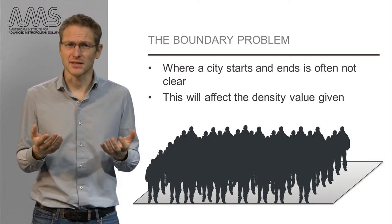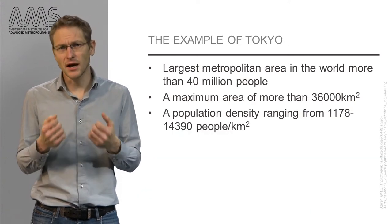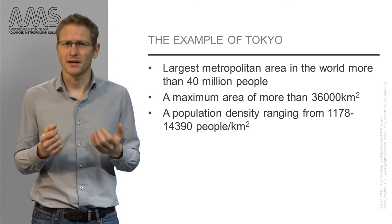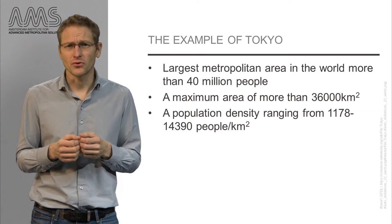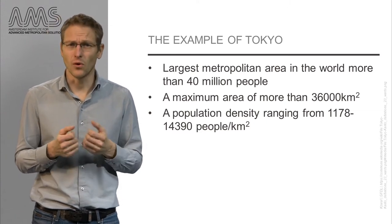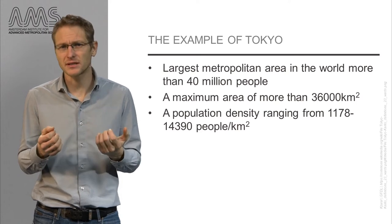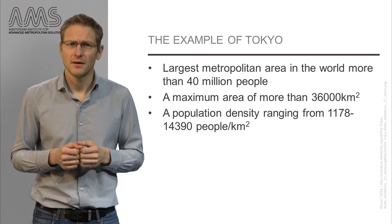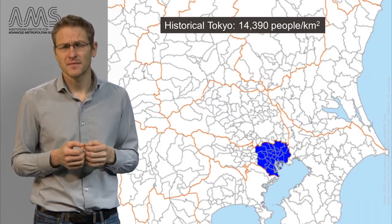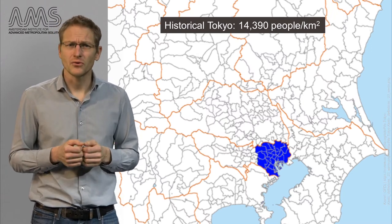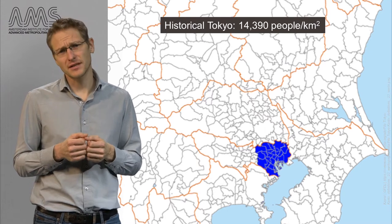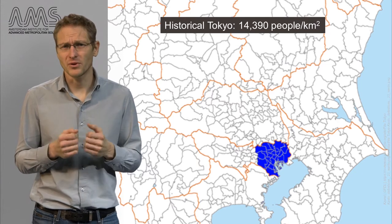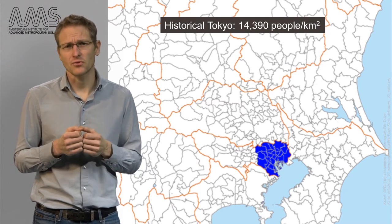Let us look at this problem using the example of Tokyo. Tokyo is the largest metropolitan area in the world with more than 40 million people, and depending on which document you consult, the area of Tokyo can be up to 30,000 square kilometers — or larger than Belgium. The population density varies between 1,200 to more than 14,000 people per square kilometer, but that really depends on what you define as the city. For example, the historical center of Tokyo — until 1943, this was defined as the city of Tokyo. In this highly populated center, we have population densities of more than 40,000 people per square kilometer.